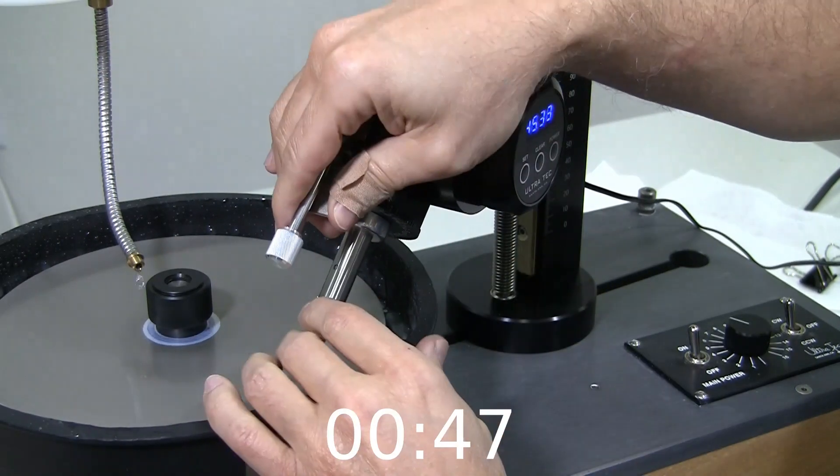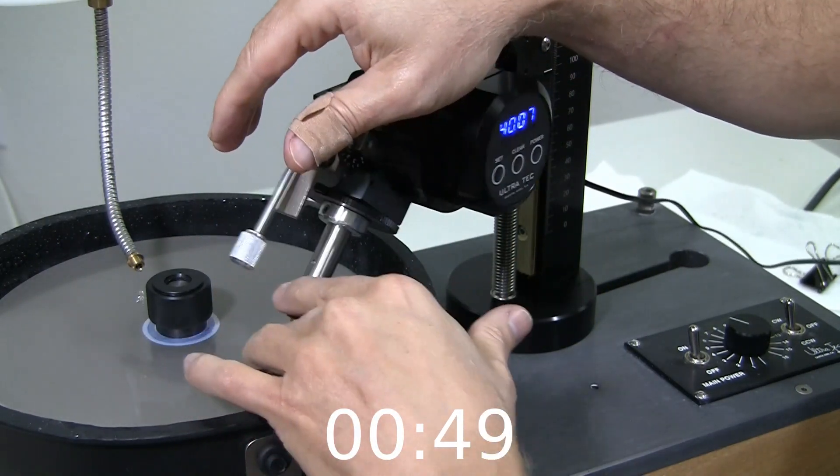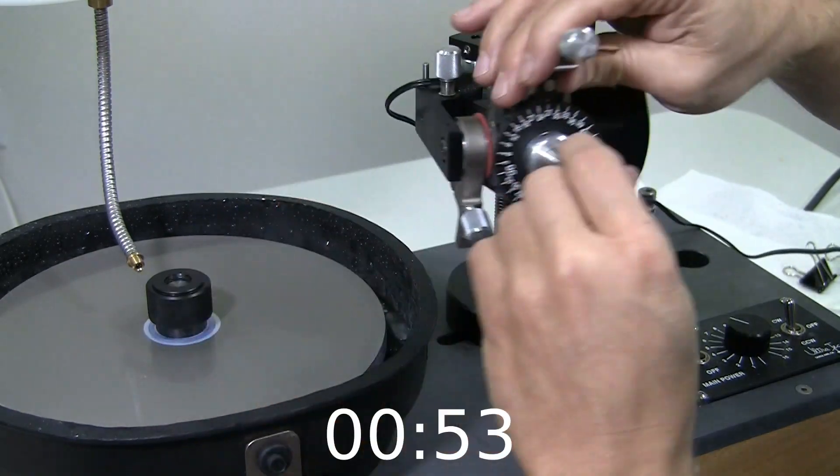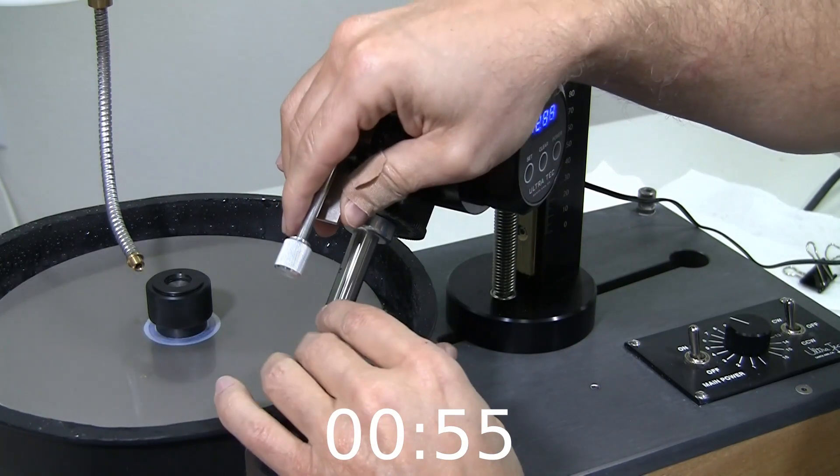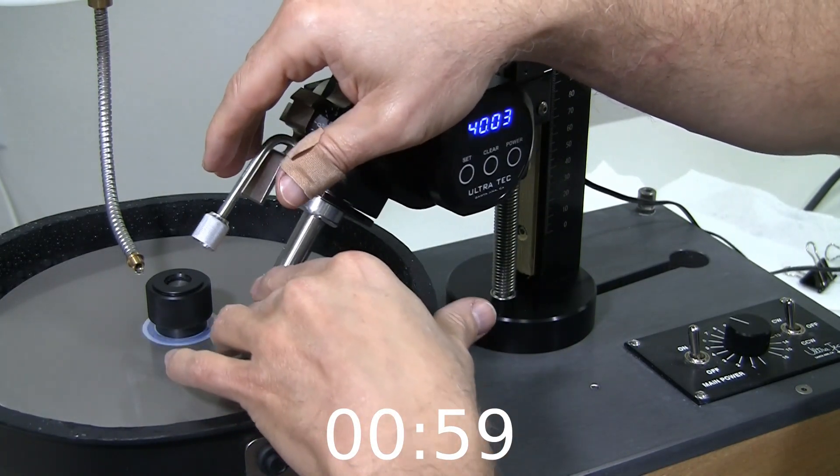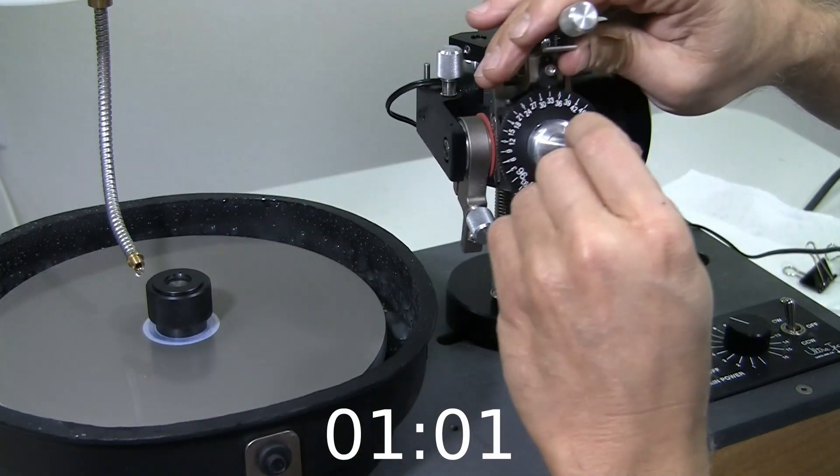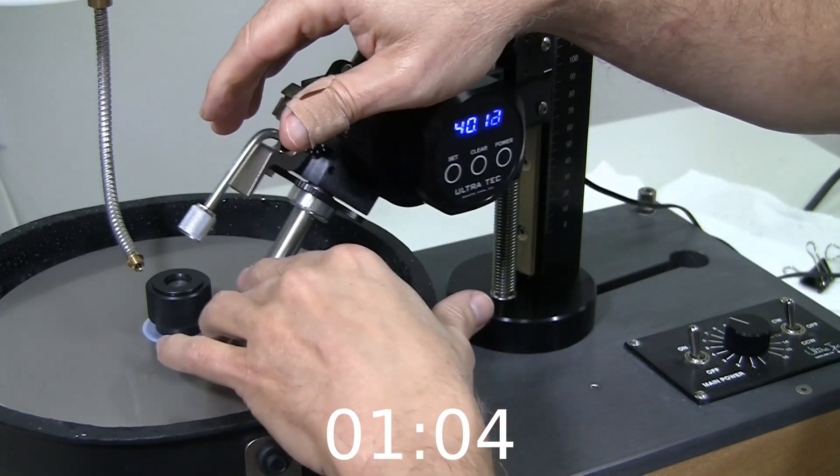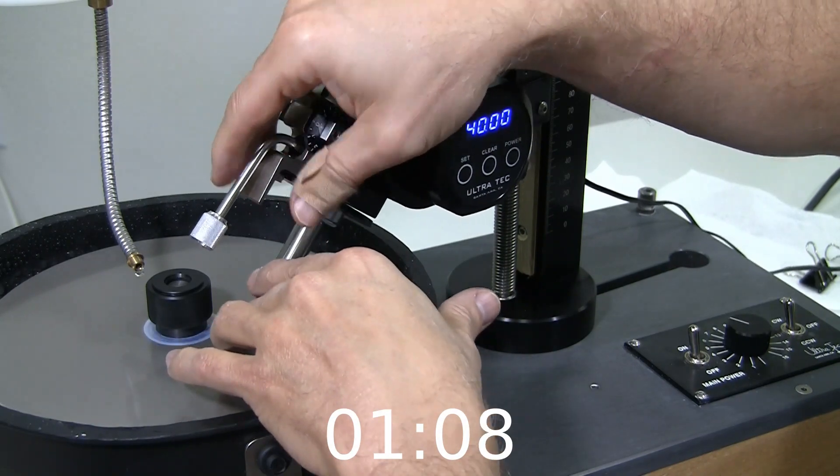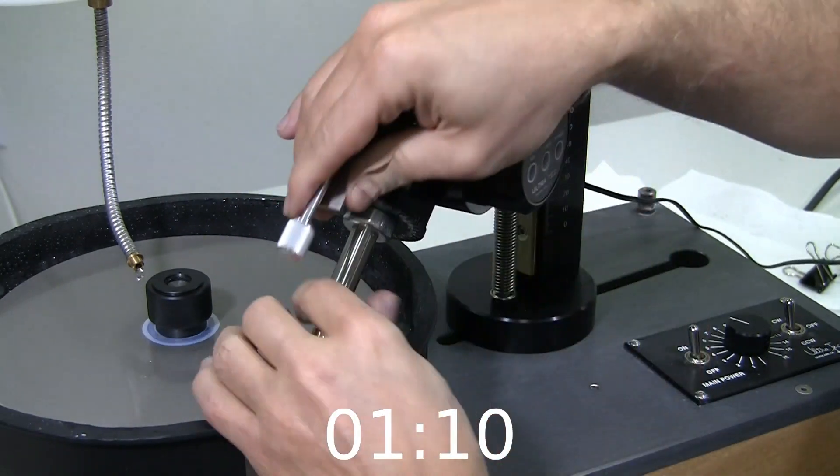This will allow you to cut very accurate depths of cut. This V5 Digital dial indicator is extremely accurate. It's very repeatable. And you can move very quickly to keep the stone against the lap most of the time.